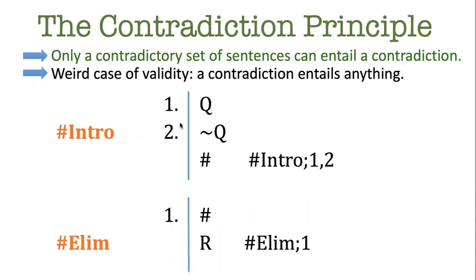So let's say that we have two sentences that make an explicit contradictory set, like we have some sentence Q and then the exact sentence negated, not Q. This is a contradictory set, they can't possibly both be true.